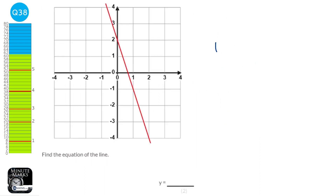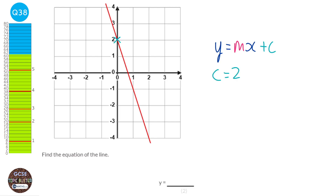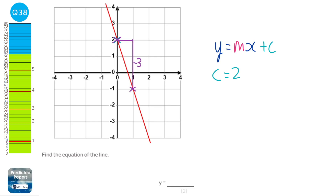We can write the equation of any straight line as y equals mx plus c, where m is the gradient and c is the y-intercept. The y-intercept is where the line crosses the y-axis — in this case it crosses at 2. To find the gradient, we need two coordinates. For every 1 we go to the right, we go down 3, so the gradient is minus 3. Our equation is y equals minus 3x plus 2.